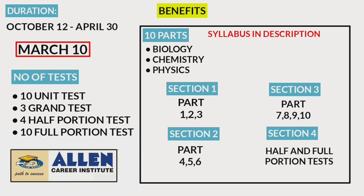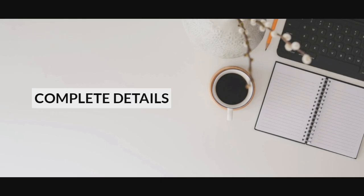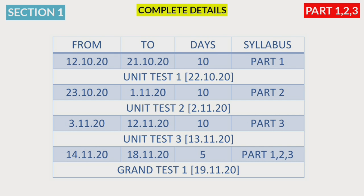In Section 1, we will complete the first 3 parts from 12th October to 19th November. After completing these 3 parts, you will take a unit test. Then, if you want to complete these 3 parts again in 5 days revision, you will complete a grand test. That covers the Section 1 schedule.